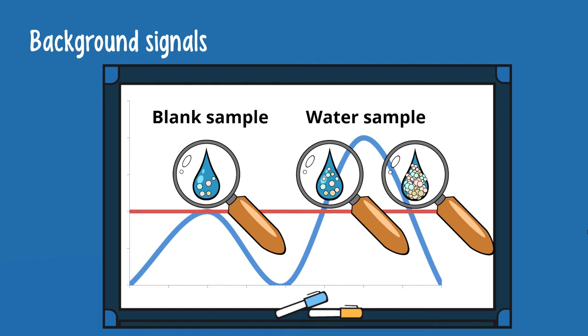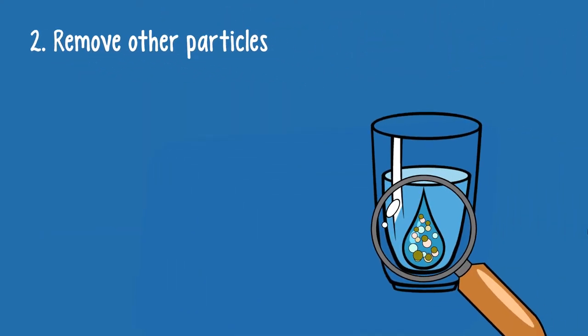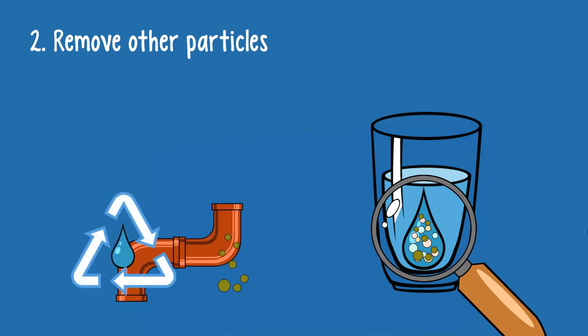That means, the higher and the more variable the background signal is, the harder it is to identify low levels of microplastic pollution. Second, in addition to microplastics, even clean-looking drinking water may contain other tiny particles, for example, inorganic ones, like metals. They could come from pipes or remain in the water despite treatment.